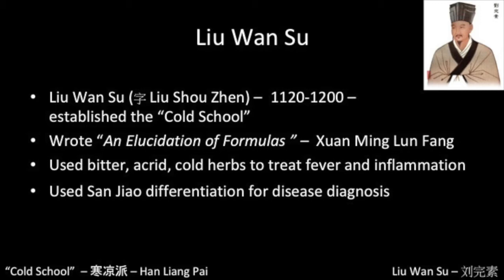He used bitter, acrid, and cold herbs to modify Shang Han Lun formulas that relied more on acrid and warm herbs. Liu Wan-sou was also the first to use Sanjiao differentiation as a basis to determine treatment for warmth disease.